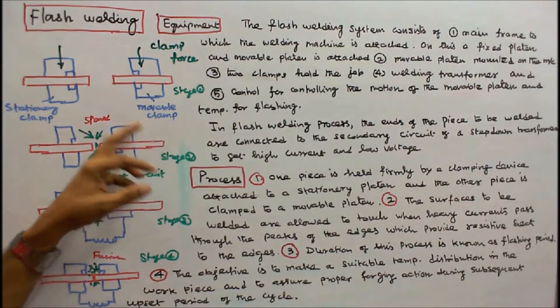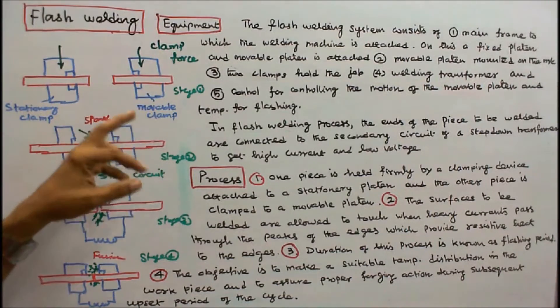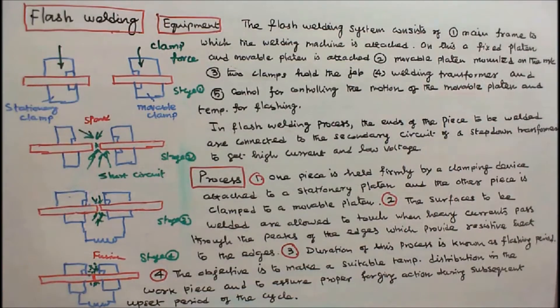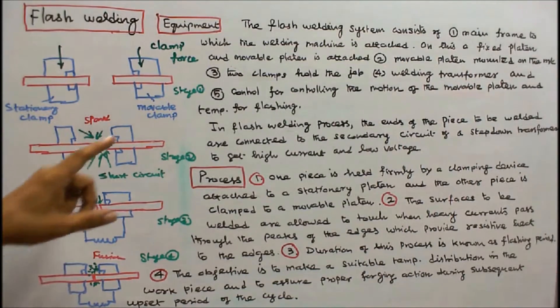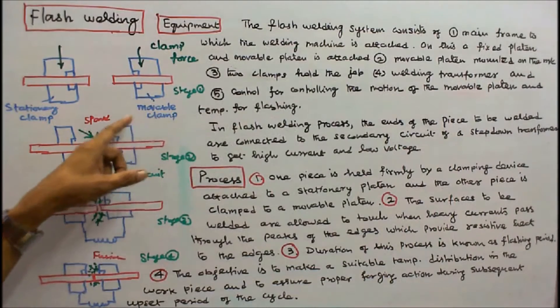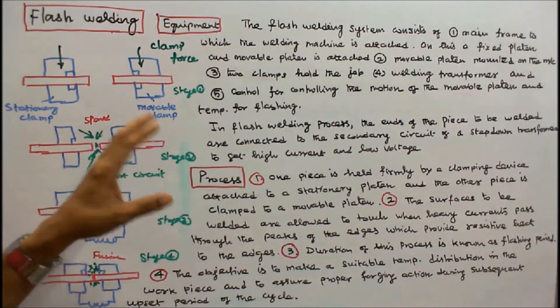3. Two clamps hold the job. 4. Welding transformer. 5. Control for controlling the motion of movable platen and temperature for flashing.